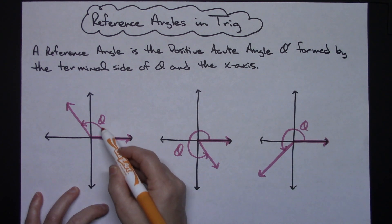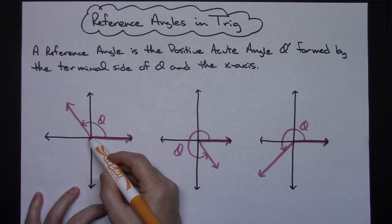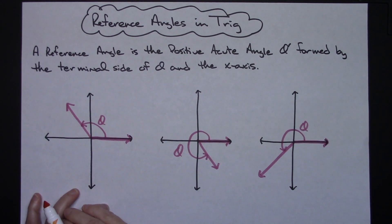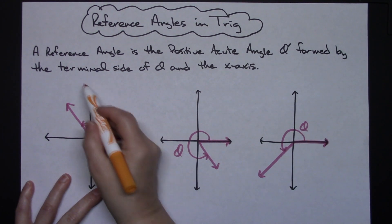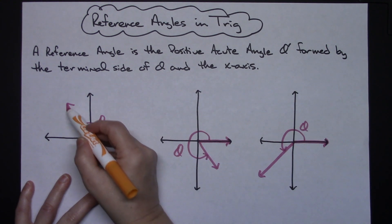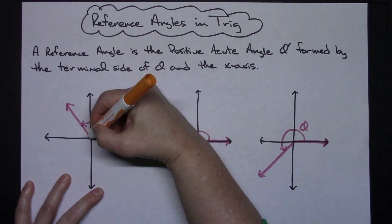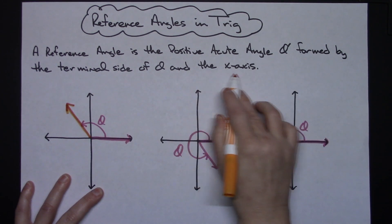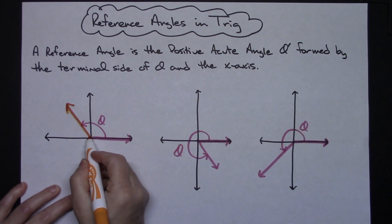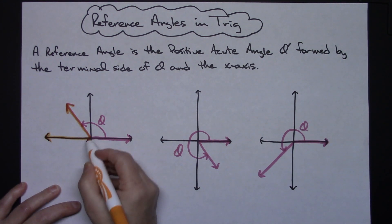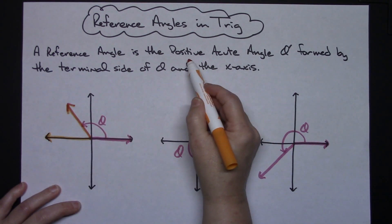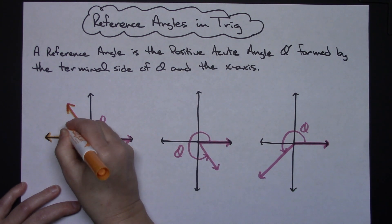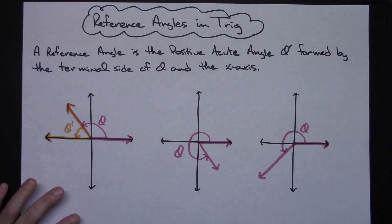In this first example, let's say that theta ends up being in the second quadrant. So then the question is where would your reference angle be? Well it has to be formed by the terminal side of theta. So there's the terminal side of theta, we'll highlight that orange. And it also has to be between the x-axis, so the x-axis is going right here. So right there it will be an acute angle and it will be positive. So right there would be your reference angle.